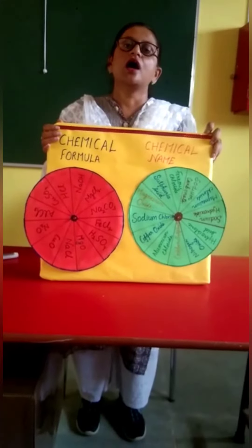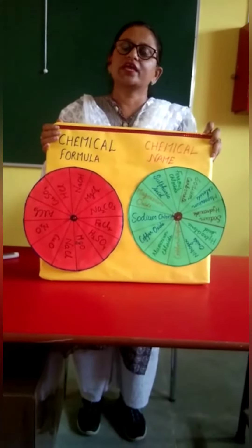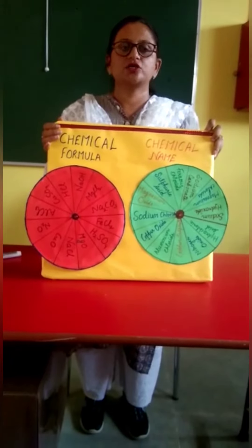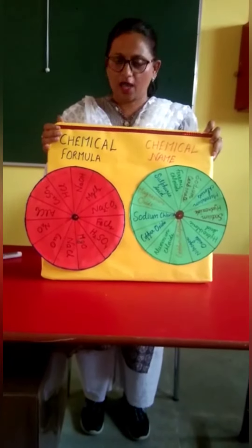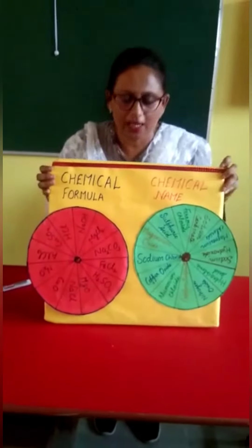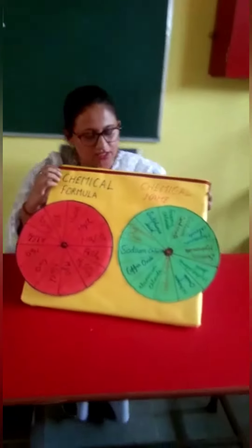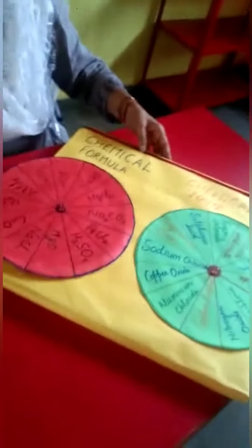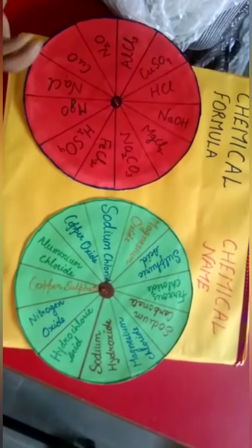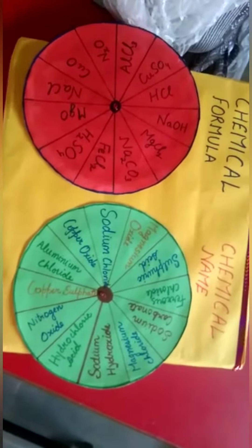I am Reva Saigar. I am working as science mistress in the government high school Rajova. Today I am going to represent a model which helps the student to understand and recognize the various chemical formulas and chemical names of various compounds.